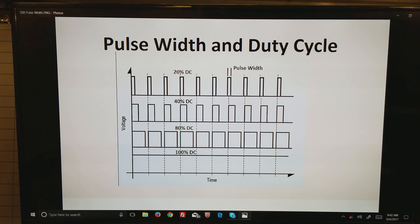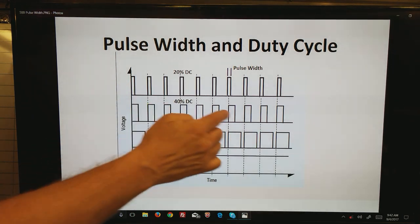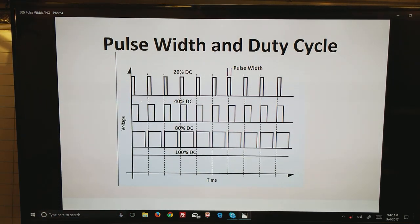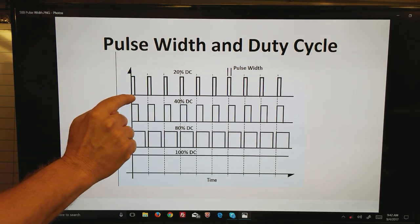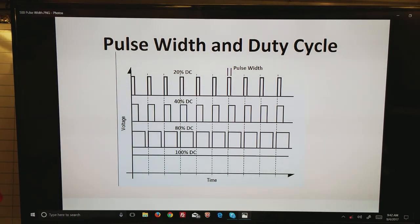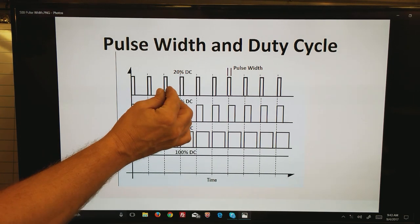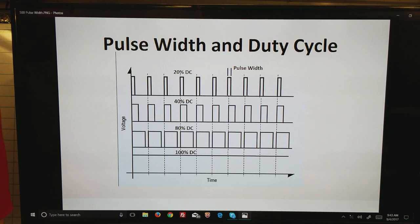So now let's talk about pulse width and duty cycle. These two terms are very much related. On the bottom we have time, and any one of these is a single signal. The first one is 20% duty cycle. We have zero volts here, we run up to 12 volts, drop back down to zero and wait some time, and apply another 12 volts for a certain amount of time. That certain amount of time is the pulse width.